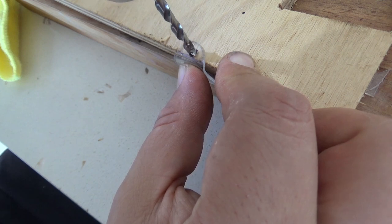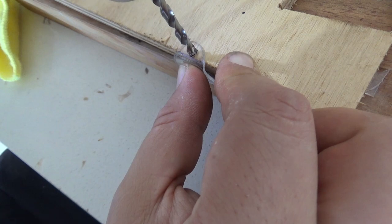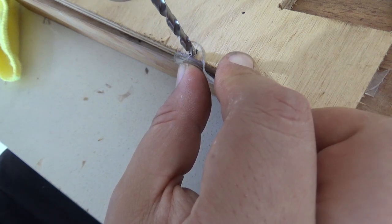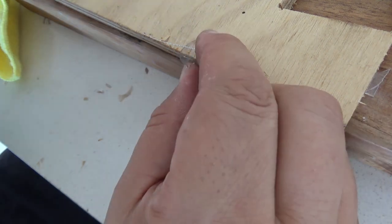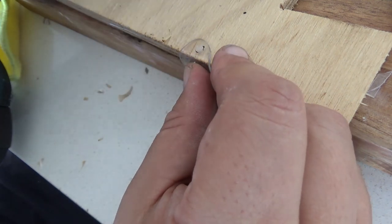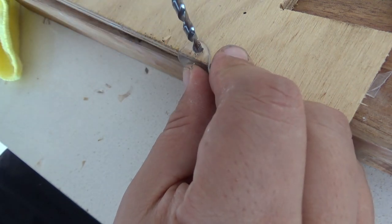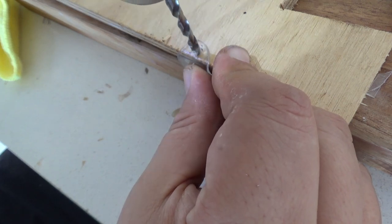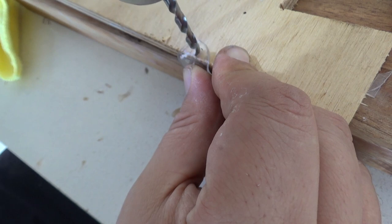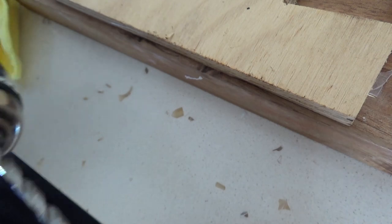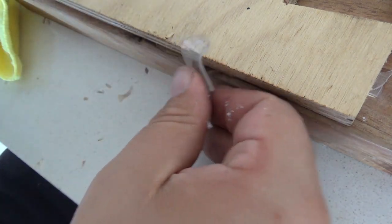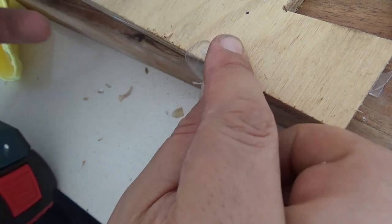And you'll see at some point it will try and bind. At that point you want to let go, lift your drill bit out. See it's starting to bind now. And it generally binds when it starts to get close to going through. And this is the critical point.